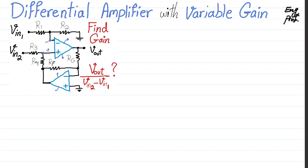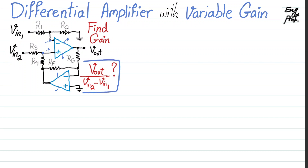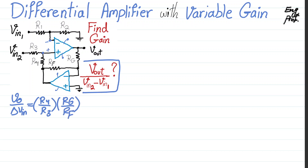A differential amplifier with variable gain is shown here. We have Vin1 and Vin2 as input voltages, and then we have Vout. We want to find the differential voltage gain for this system in the form of Vout over Vin2 minus Vin1. I'm going to show that Vout over delta Vin equals R4 over R3 times RG over RF in a simplified scheme when some conditions are satisfied. That's my goal.